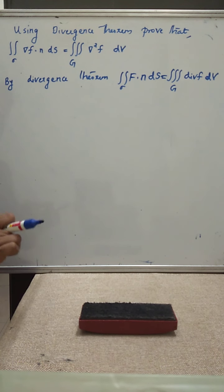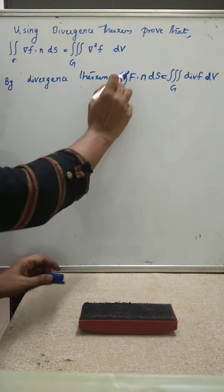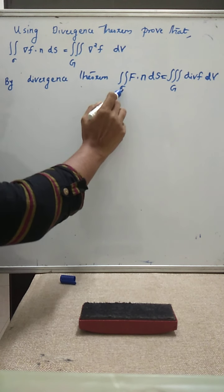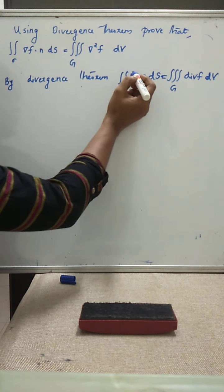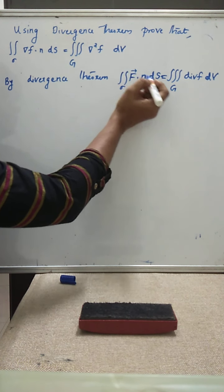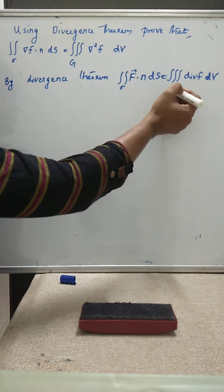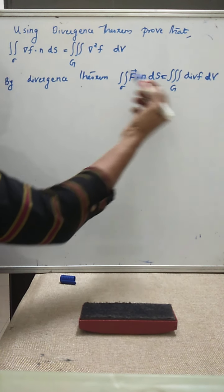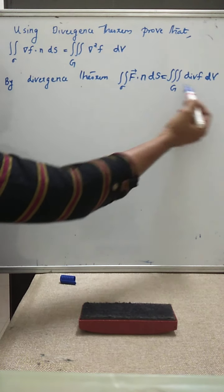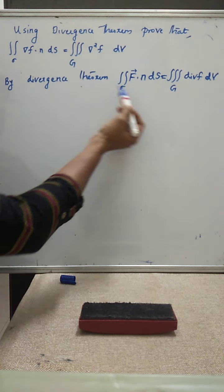We already know that by the divergence theorem, the double integral over sigma of capital F dot n dS is equal to the triple integral over G of div F dV. We can make use of this theorem in order to prove this result.